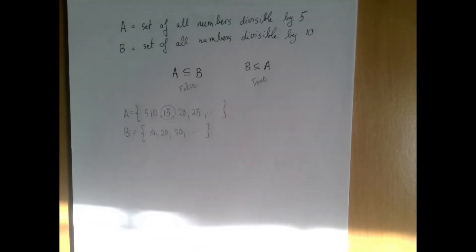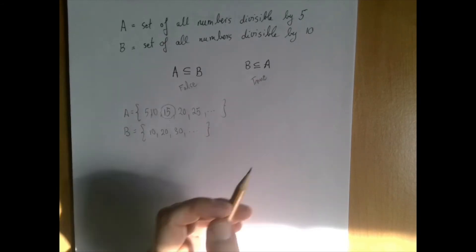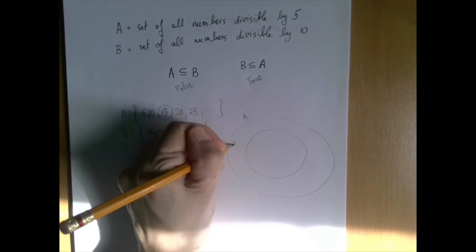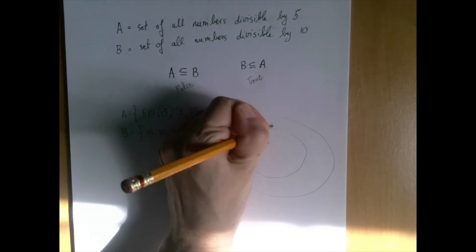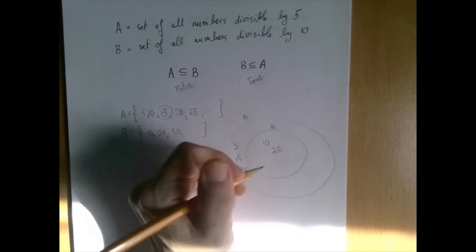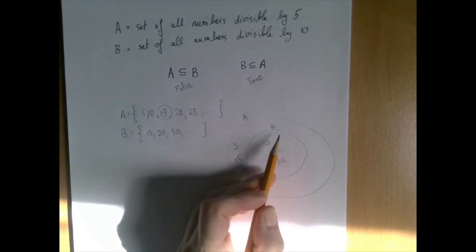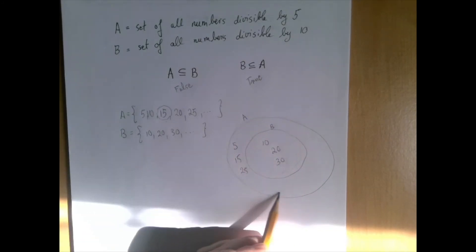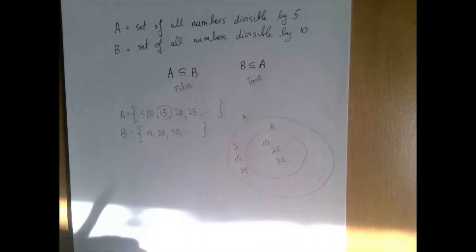There are other ways to interpret this statement. For example, if we draw a picture, if B is indeed a subset of A, then we can write A and B so that B is completely contained in A, but not the other way around.